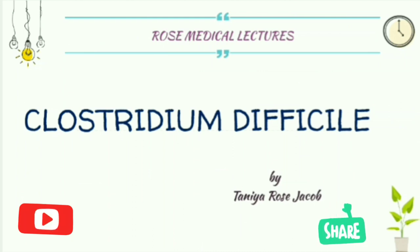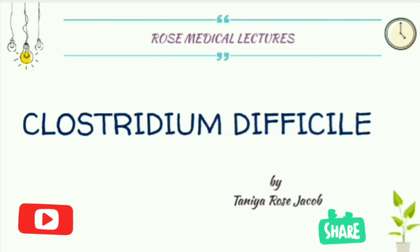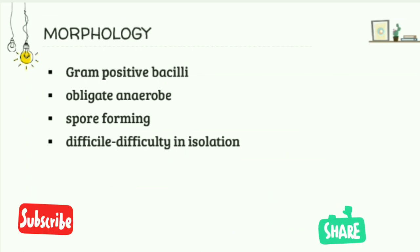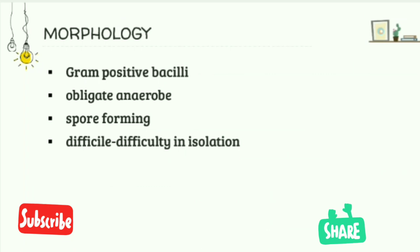Clostridium difficile is a gram-positive bacilli — it takes the purple color on gram staining and is rod-shaped. It's an obligate anaerobe, meaning it doesn't require oxygen for growth. It is a spore-forming bacteria, and it was given the name 'difficile' due to the unusual difficulties involved in its isolation.